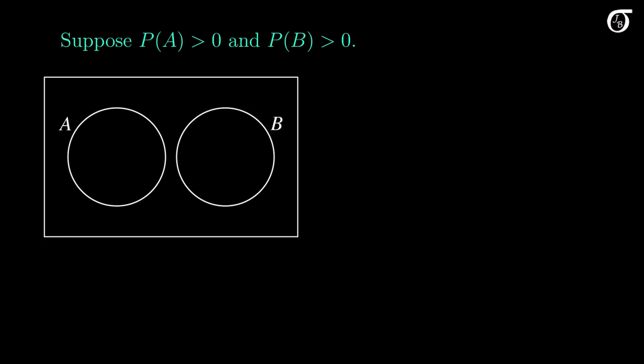Suppose that A and B are mutually exclusive events, where the probability of A is greater than 0, as is the probability of B. This of course implies that the product of their probabilities P(A)P(B) is greater than 0.